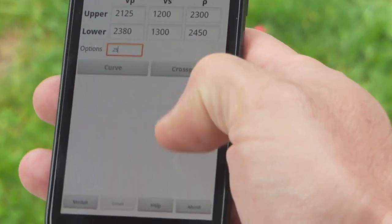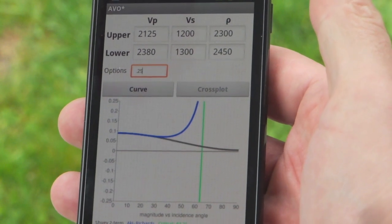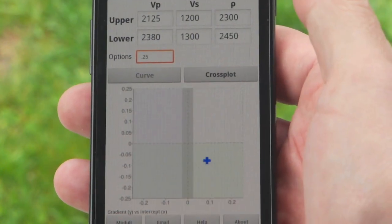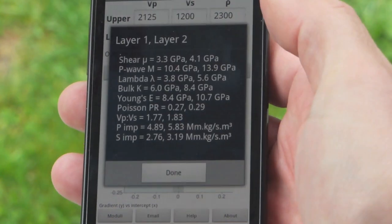Once you've input your acoustic and elastic parameters, you can tap curve to bring up magnitude versus incidence angle curve, Aki-Richards and the Shoe equation, or cross-plot to bring up a gradient versus intercept cross-plot.